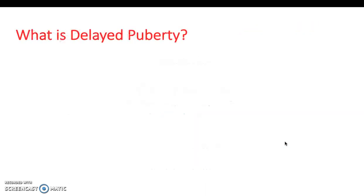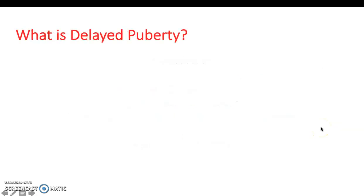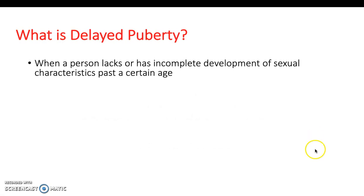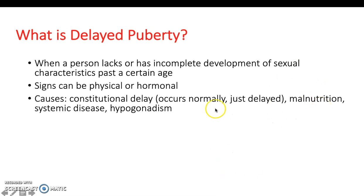So, delayed puberty — what we'll be going through today: what it is, symptoms and history, investigations, differentials, and management. Delayed puberty is when a person lacks or has incomplete development of sexual characteristics past a certain age, and this can be physical or hormonal. Constitutional delay is when development occurs normally in the same order but is just a bit delayed — probably the most common cause and not as concerning as others. Other causes include malnutrition, systemic disease, and hypogonadism.